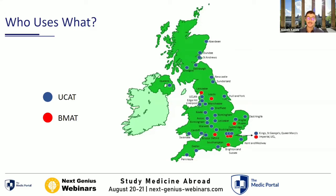Who uses what? Universities indicated in blue use the UCAT test — Aberdeen, Dundee, St Andrews, Edinburgh, Glasgow in Scotland, down to Peninsula, Exeter, Southampton, and Kent Medway in the south of England. In London, King's, George's and Queen Mary require the UCAT. The vast majority of UK medical schools need the UCAT, meaning you essentially can't avoid taking it. In red, we can see the BMAT schools — UCL, Brighton, Sussex, Lancaster, Leeds — all requiring the BMAT.